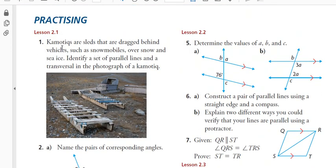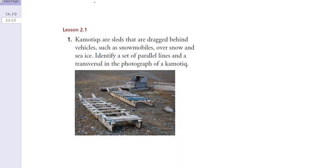Number one: camel ticks are sleds that are dragged behind vehicles. Identify sets of parallel lines and transversals in the photograph. If you look at that photograph, you could superimpose some lines here. These lines — the slats — appear to be parallel. If those are parallel lines, what's one of the transversals? Well, if you look at this rib right here, that's a transversal. These two lines appear to be parallel, and then the slats would be a transversal. Because of the perspective, this distance is a little smaller, so I would probably go with these slats being the perpendicular ones.